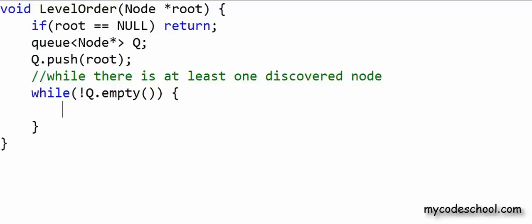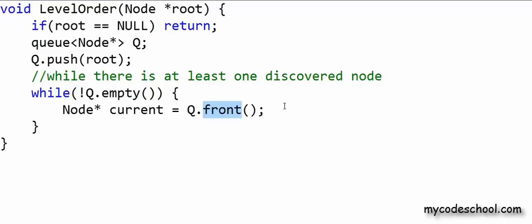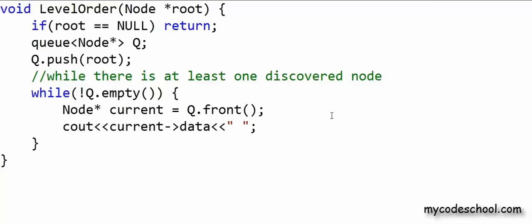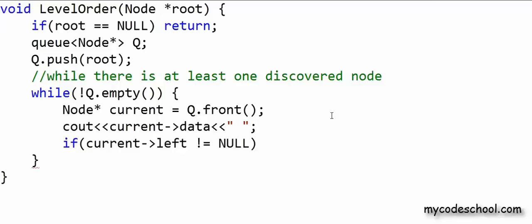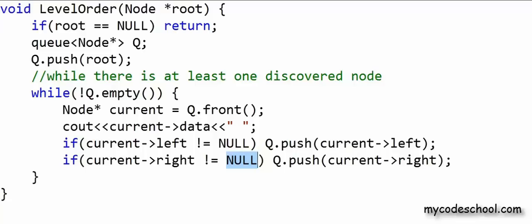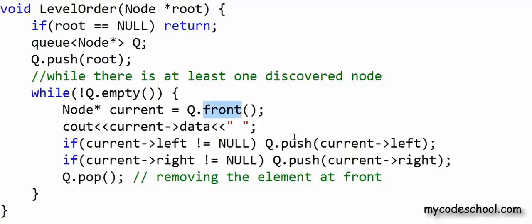Now I will run a while loop with the condition that the queue should not be empty — meaning while there is at least one discovered node. Inside the loop, we take out a node from the front. The function 'front' returns the element at the front of the queue, and because the data type is pointer to node, I collect the return value in a pointer to node named 'current'. Then I can visit this node by printing its data. Next, we push the addresses of its children into the queue: if the left child is not null, insert it; and if the right child is not null, push it as well. Finally, I call 'pop' to remove the element from the front of the queue — 'front' alone does not remove it.